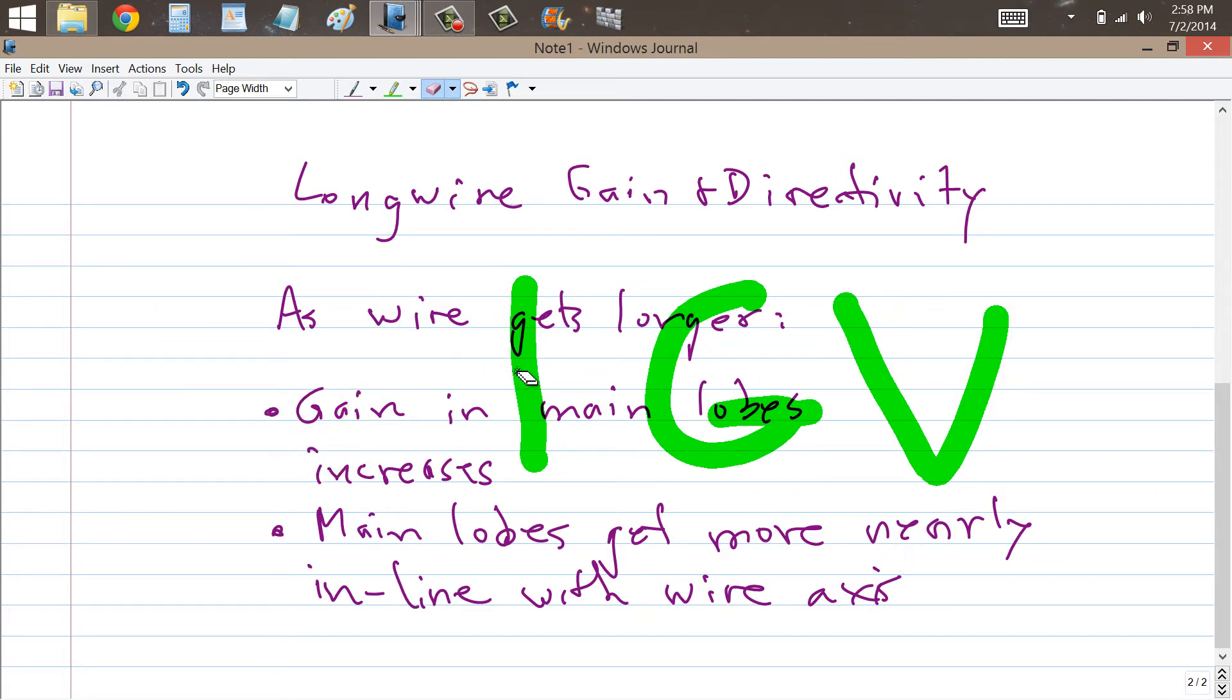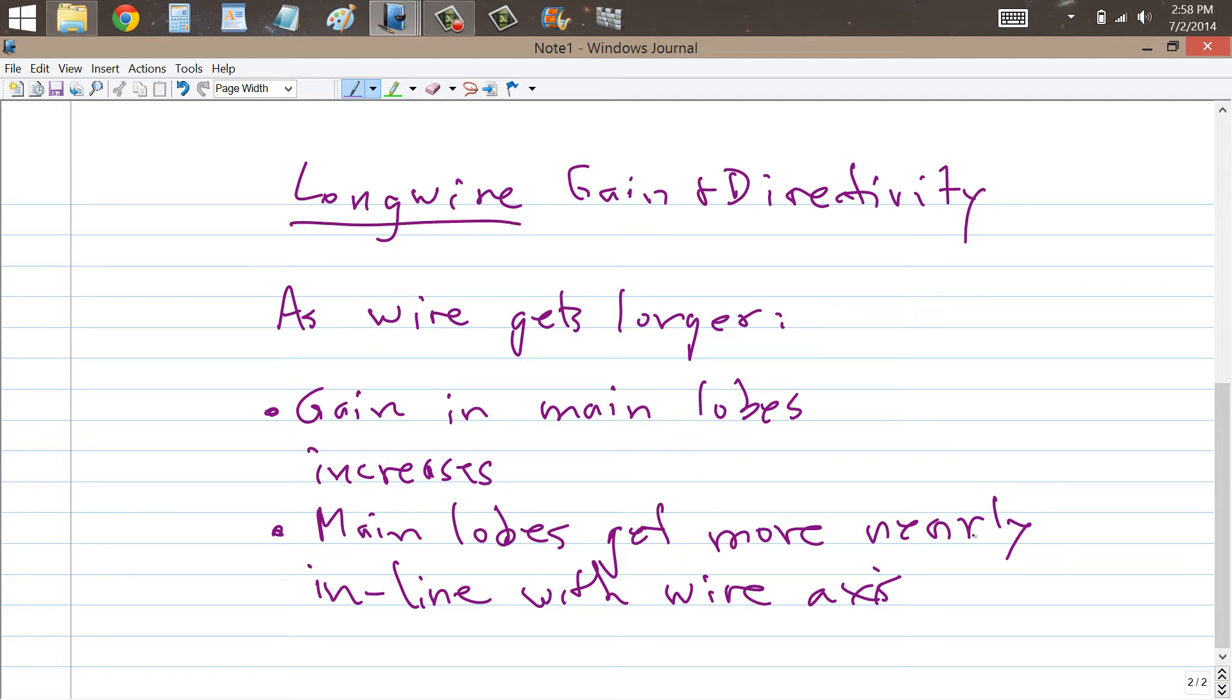Here to talk about long wire antennas, and in particular the gain and directivity that they exhibit. Now one criterion that I need to clarify at the outset with regards to long wire antennas is that they are at least a wavelength long at the lowest frequency of operation in which you intend to use them.